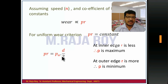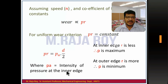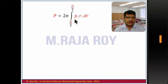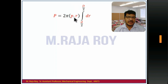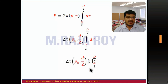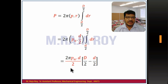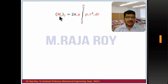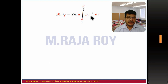p_a · (d/2) is the maximum intensity of pressure at the inner edge. Substituting p·r = p_a · (d/2) as a constant and taking it out of the integration, substituting in the operating force integral, then performing the integration and simplifying gives the final equation for operating force P.